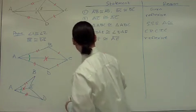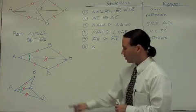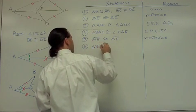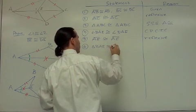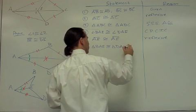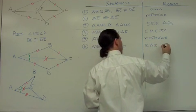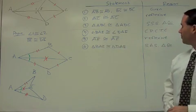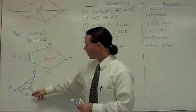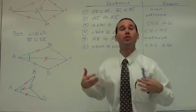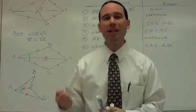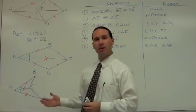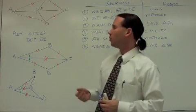That triangle ABE is congruent to triangle ADE by side, angle, side. So once we have these little triangles congruent, well, now the world is our oyster. We can pick and choose any pieces of them that we want. All of these corresponding angles are congruent. All of the corresponding sides are congruent. In particular, what are we interested in?